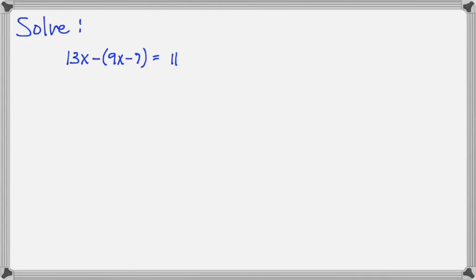So now we're going to look at a few examples together. And the first one is 13x minus parentheses 9x minus 7 close parentheses equals 11. So first, let's distribute this negative. Now I don't want to distribute the 13x because it's not 13x times this parentheses. It's 13x minus this parentheses, so let's just distribute the minus sign. And we'll get 13x minus 9x and plus 7 equals 11.